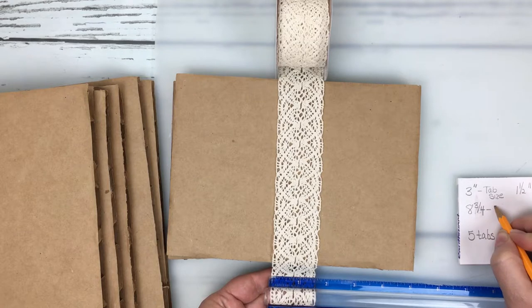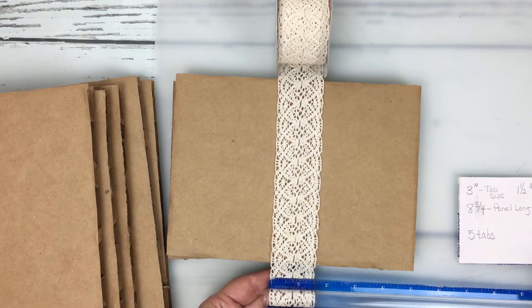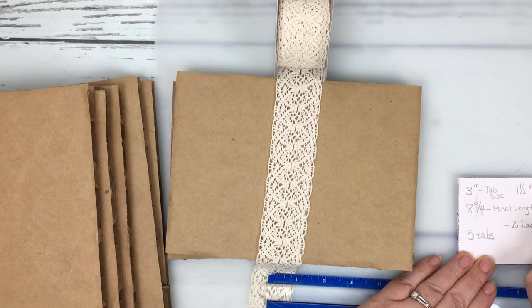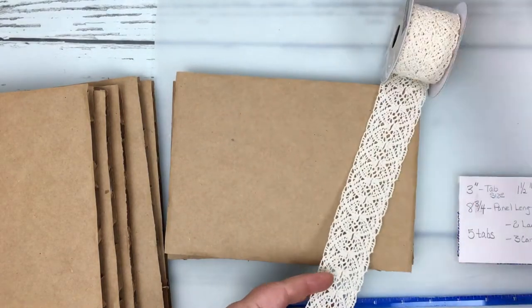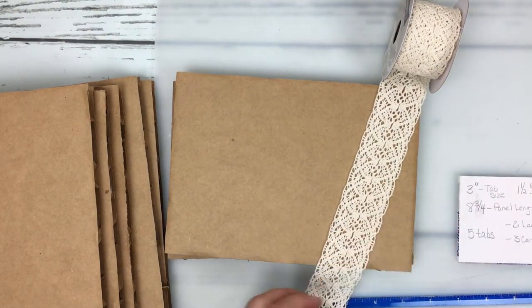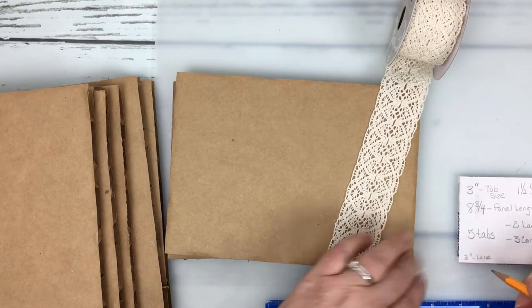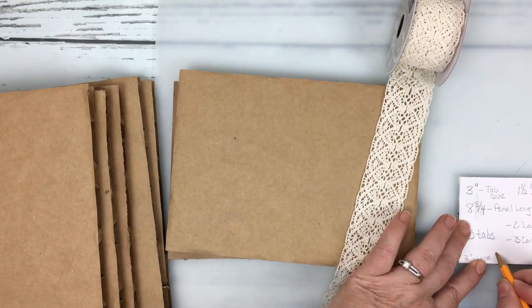I've decided I could fit five tabs on here and I want half of my tabs to be in this lace that you see and half of my tabs are going to be in some canvas. Now I'm just deciphering how wide each of these tabs need to be to fill the space.